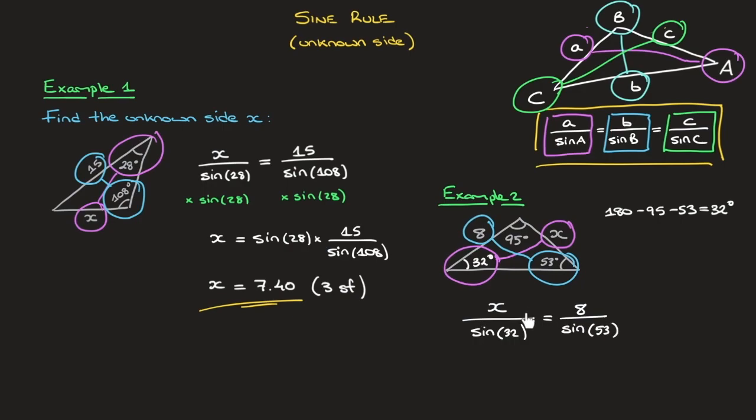Now, multiplying both sides of this equation by sine of 32, which is dividing the X, leads to X equals sine of 32 times 8 over sine of 53.